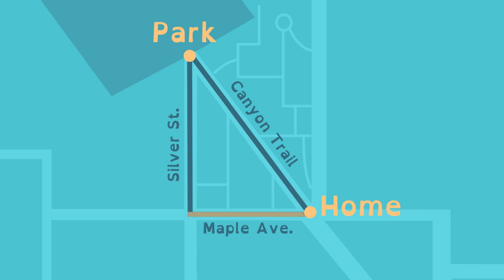She knows the two legs, Maple Avenue and Silver Street, are 3 and 4 miles long. Applying the Pythagorean Theorem, 3 squared plus 4 squared equals 25. She knows that 5 squared is 25.